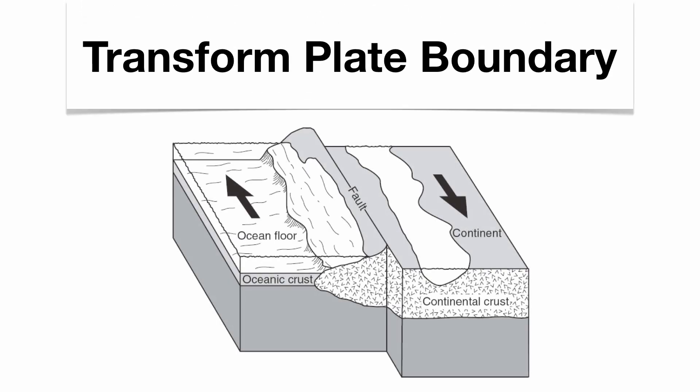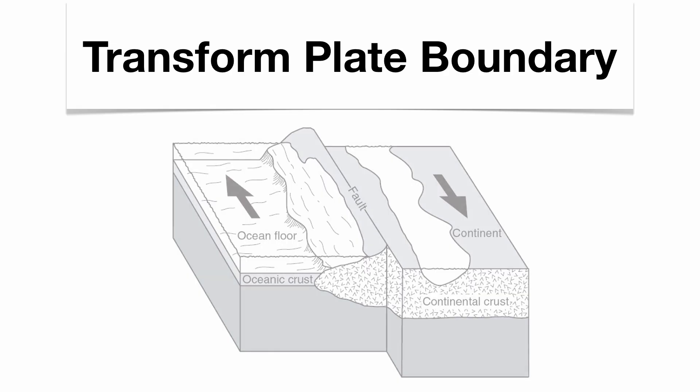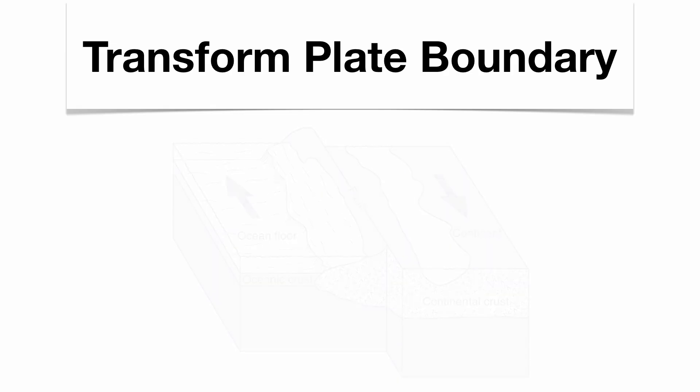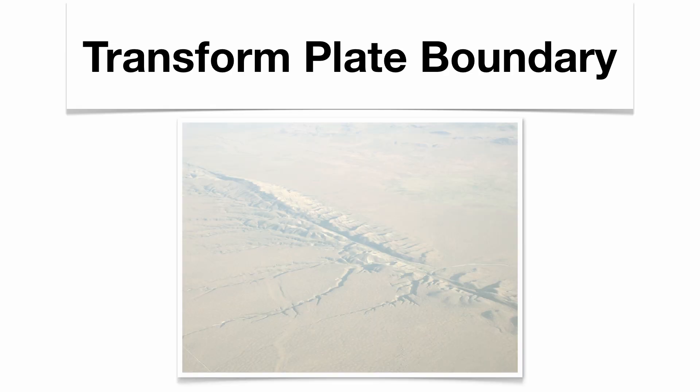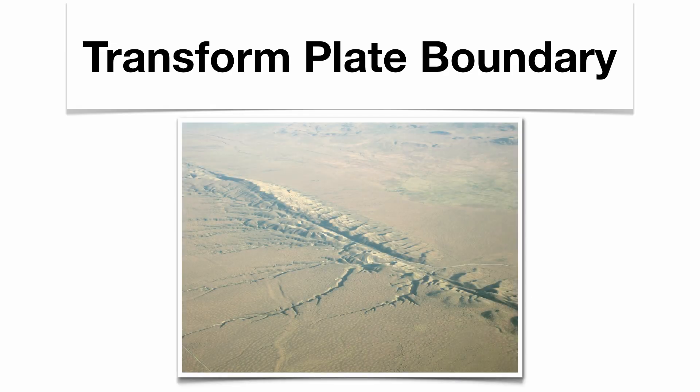Your convection cells are going to cause one plate to travel north and the other plate to travel south, with the San Andreas Fault right in the middle. Here's an actual photograph of the San Andreas Fault — the big crack right through the middle of the picture, with the North American plate and Pacific plate on either side.